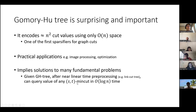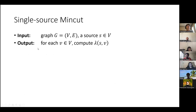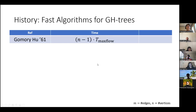Because of this, computing all-pairs minimum cut values given the Gomory-Hu tree takes just n² time, and single-source min cut takes only n additional time. Single-source min cut is the problem where, given a graph and source s, you want to compute the value of the sv min cut for every node v — a natural generalization of ST min cut.